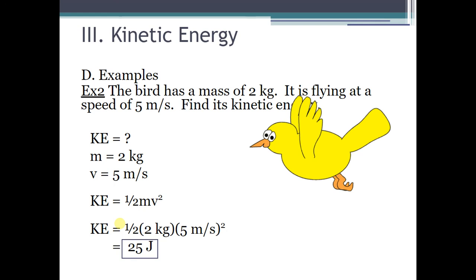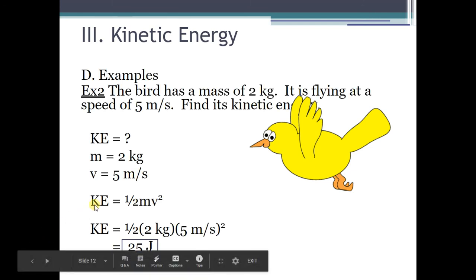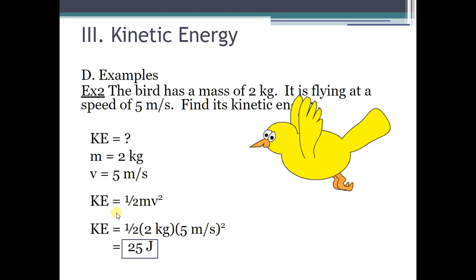After these directions, you should be able to do two things: calculate how much kinetic energy an object has using the kinetic energy equation — kinetic energy equals one half times mass times velocity squared — and calculate how much gravitational potential energy something has using the equation — potential energy equals mass times gravity (9.8) times height. Now you're ready to go on and look at the practice problems.